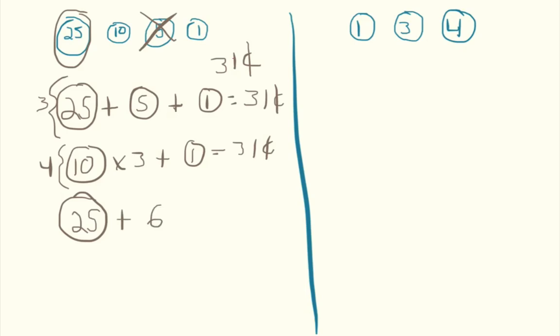In order to get our goal of 31, this would equal seven coins.